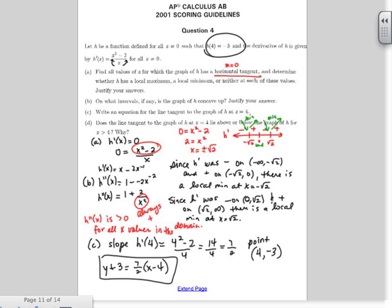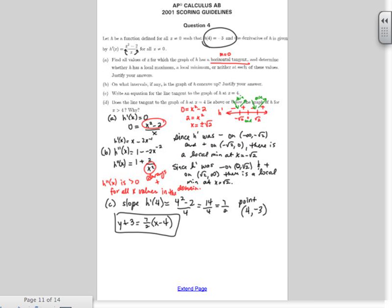But think about the line tangent to the graph of h at x equals 4. So at x equals 4, it was concave up and your slope was positive. So think of graphs that are concave up and increasing. So things like this, that's concave up and increasing.